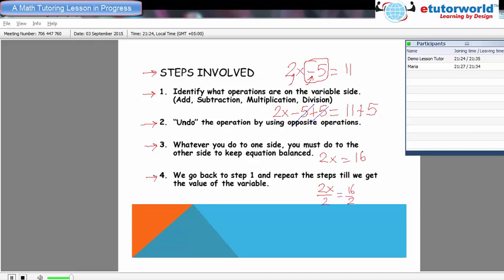So 2x divided by 2 is simply x. How much is 16 divided by 2? It's 8. Right. So x equals 8 is the solution of this particular two-step equation.